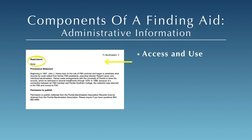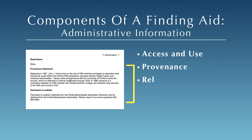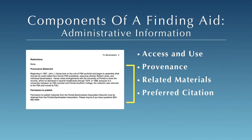The Administrative Information section provides details about any restrictions on access or use that the collection might have. This might include closure until a certain future date, limitations on fragile materials for preservation reasons, or conditions attached to publication and copying of the materials, usually expressed in a statement on copyright. Restrictions can be imposed by the institution or by the donor of the collection. Information about the provenance or ownership history of the collection can also be found here, as well as a list of related materials and a preferred form of citation for the collection.